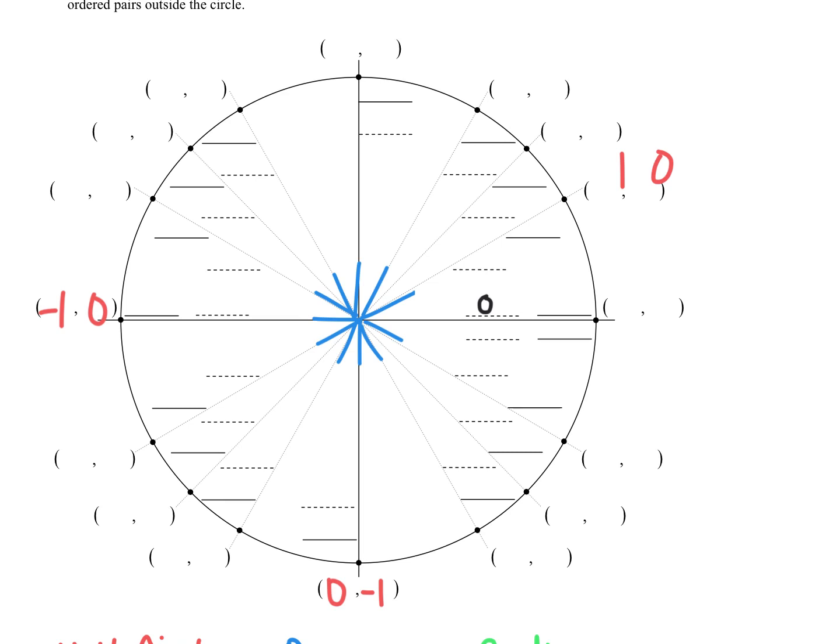So if I count by 30s on all of those lines I will have 0, 30, 60, 90, 120, 150, 180. Now that pause right there should make sense to you that this is 180 because we're halfway around the circle.